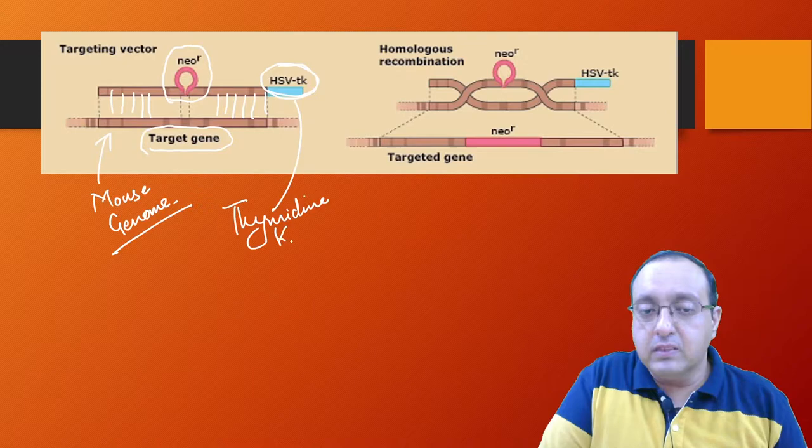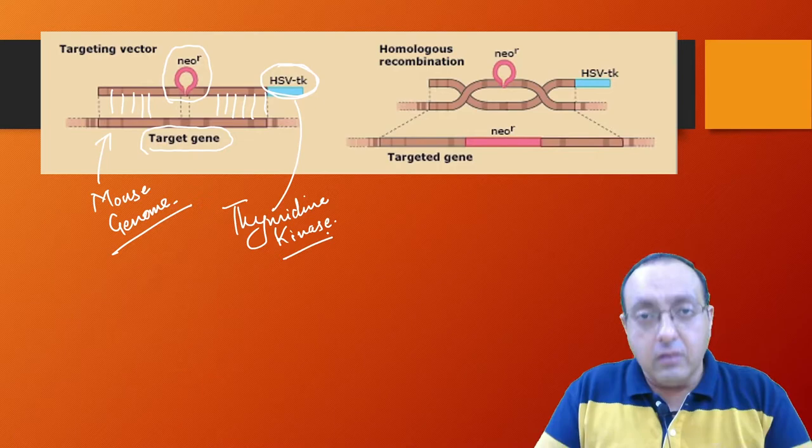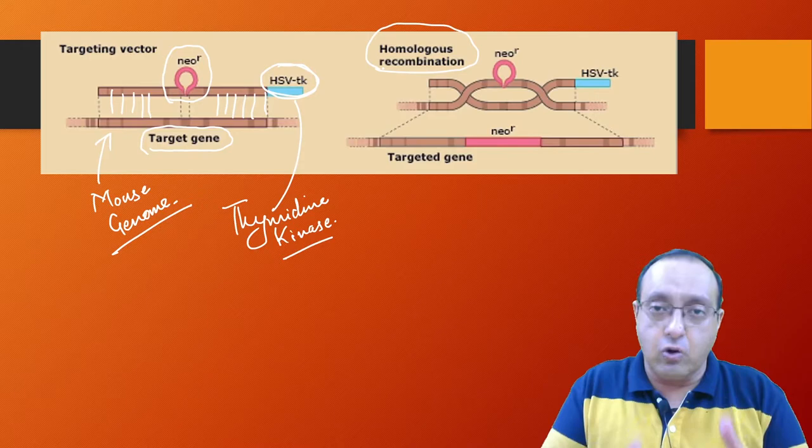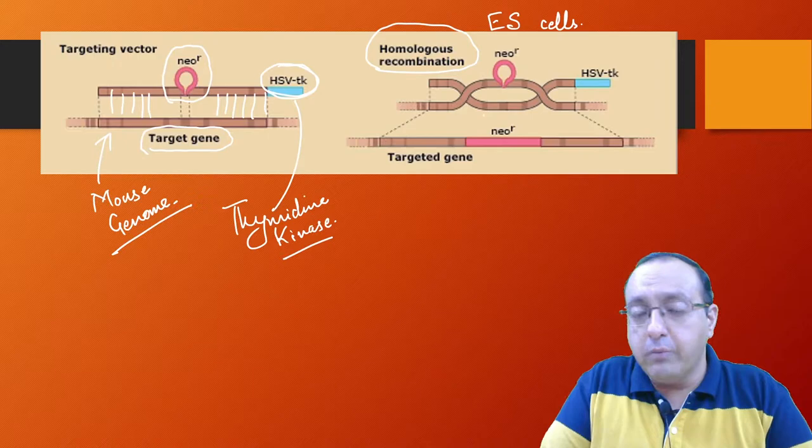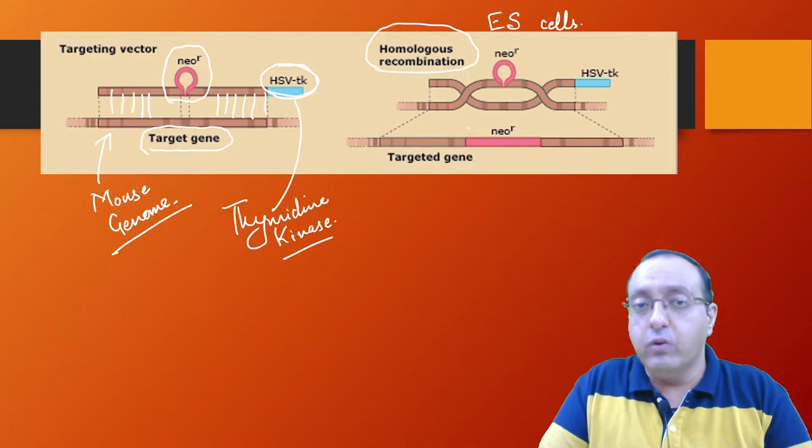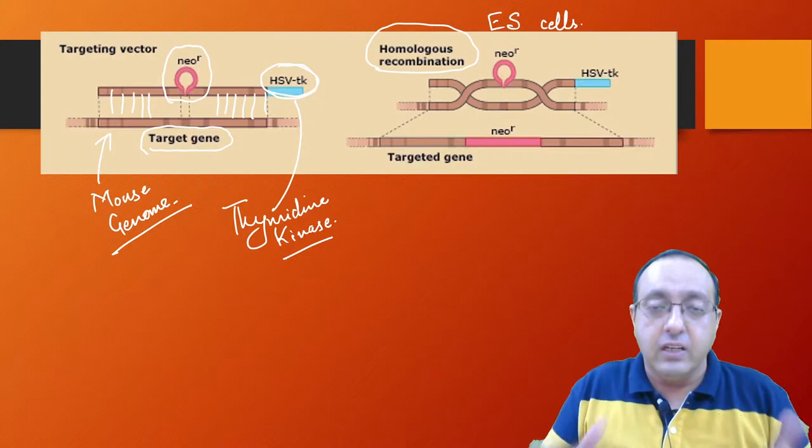This is important for the negative selection. Now the hope is that due to homologous recombination, when we transfect this targeting vector into the embryonic stem cells or the ES cells, the neomycin resistance gene as well as the homologous arms will replace the target gene, in effect creating a knockout because this will create a huge insertion in the target gene and knock out the gene. That's the hope.